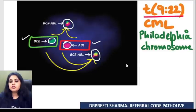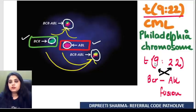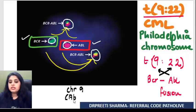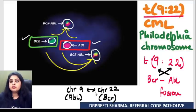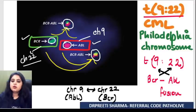The yellow color means translocation t(9;22) — BCR-ABL fusion. ABL is on chromosome 9 and BCR is on chromosome 22. So chromosome 9 has been given red, chromosome 22 has been given green. Red and green fuse → yellow color. Either call it t(9;22) or BCR-ABL, it pretty much means the same.